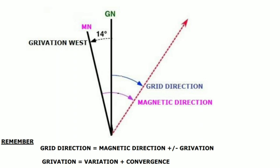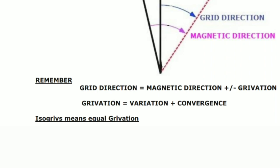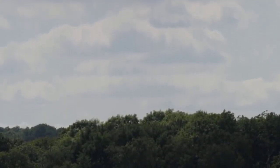Grivation equals variation plus convergence — you can also derive grivation using this formula. Grivation is the angular difference between grid north and magnetic north. There is also the term isograve, which means equal grivation — important for DGCA exams. Isograve means a line joining points of equal grivation.